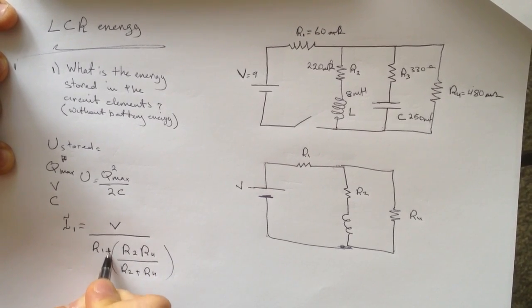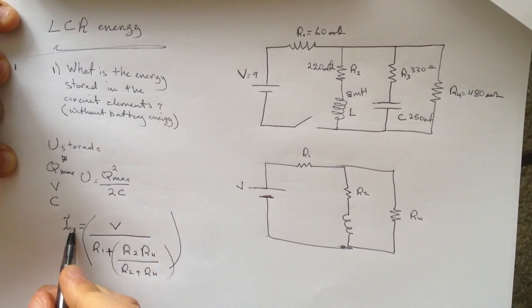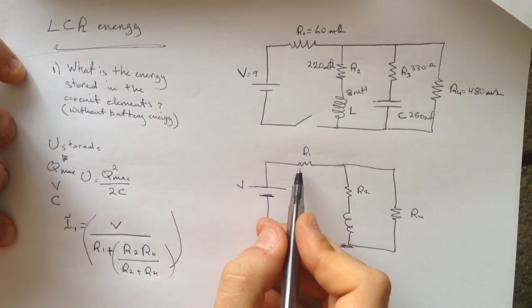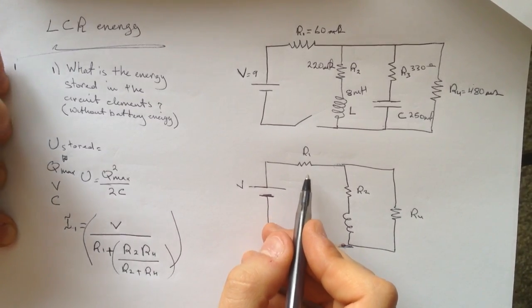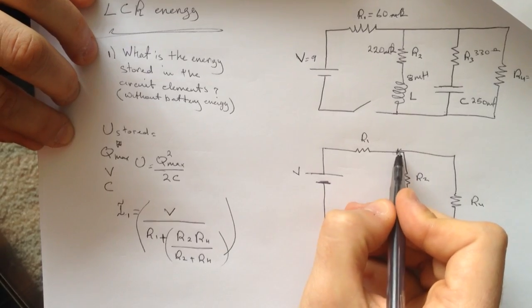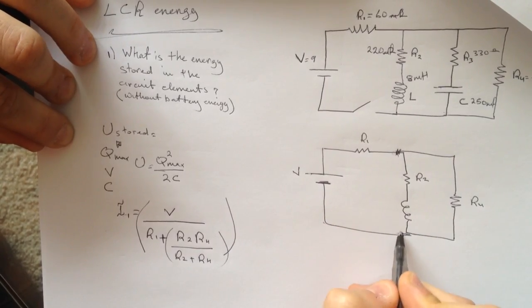This is plus sign between. So this way we find the current that's passing by the R1 here.